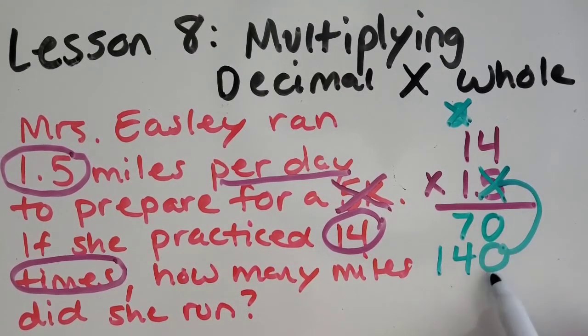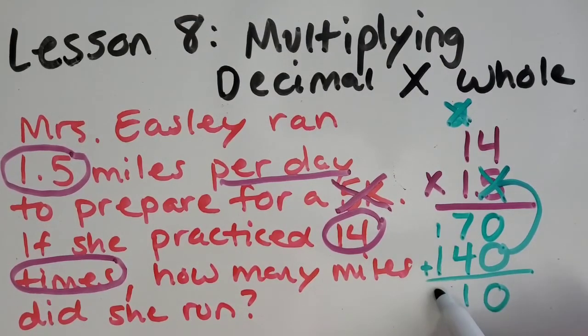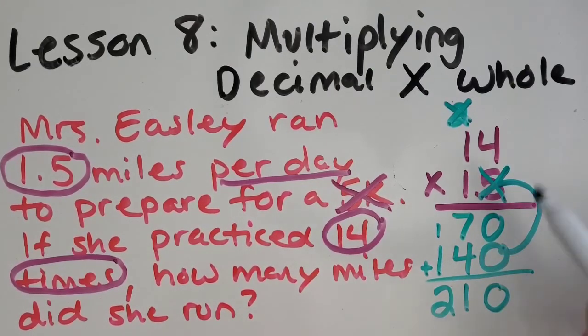And what do I do with my partial products, my two partial products? Great job. We just add them up. It will give us our total. So now I've got this number right here. Now, we never want to forget that at the very end we've got to place our decimal. So, same as the last problem, we count how many decimal place values there are. There's none in the 14. That's just a whole number. But there is one place in my bottom number. So, I just need to move my decimal over once right here. So, that means I ran 21 miles to get ready for the race. Woo! That was hard work.